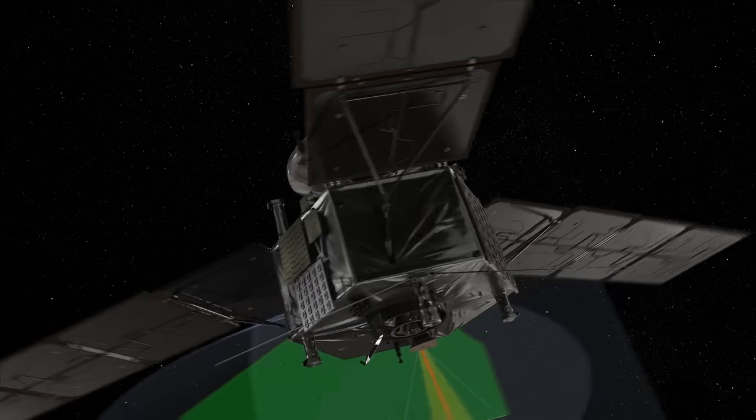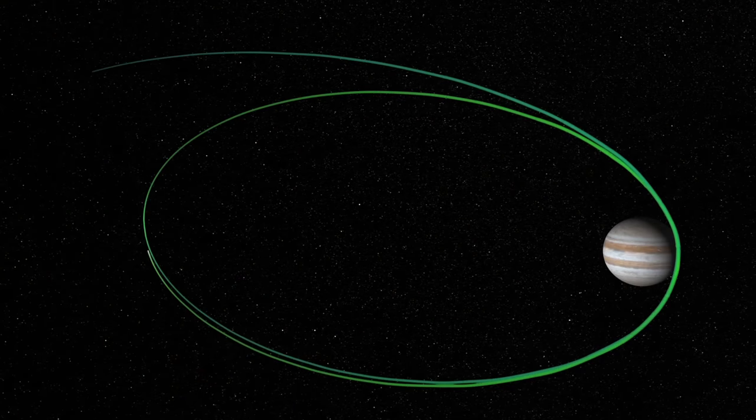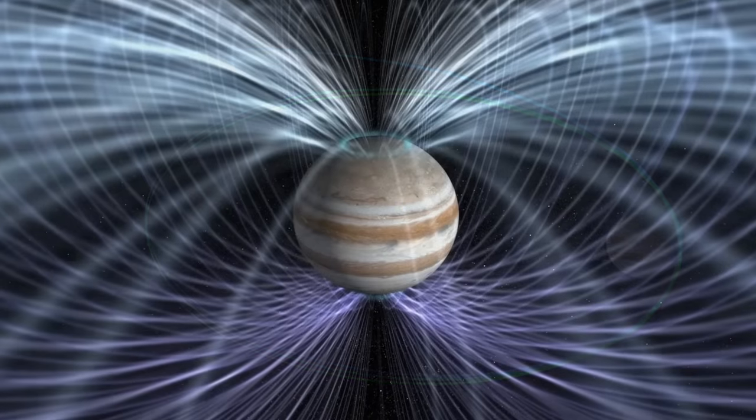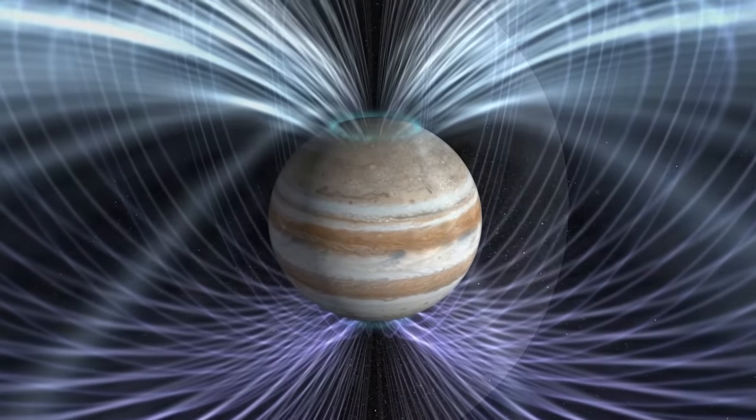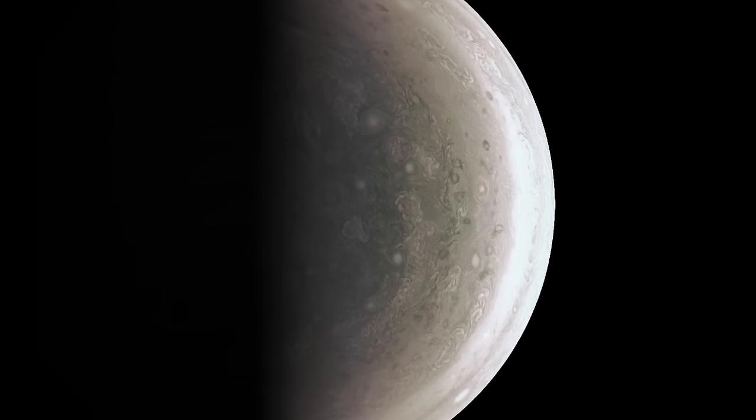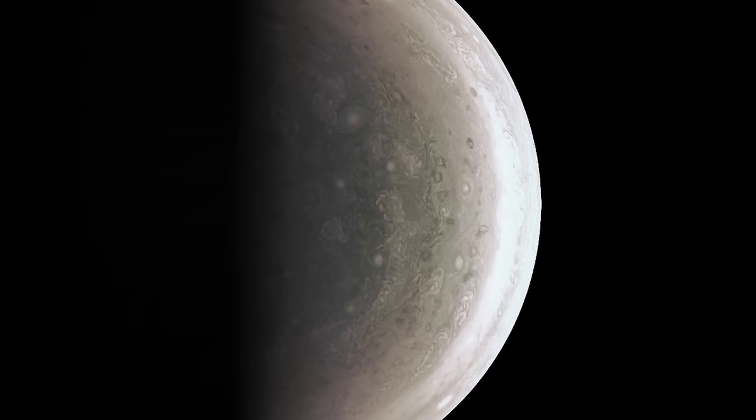During the coming months, Juno will orbit Jupiter 32 times returning imagery and data to improve our understanding of the solar system. So far, images have shown storm activity unlike anything previously seen.